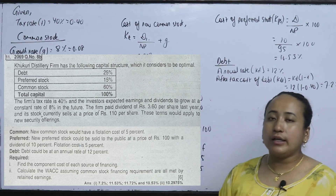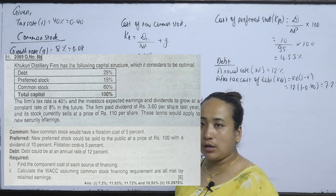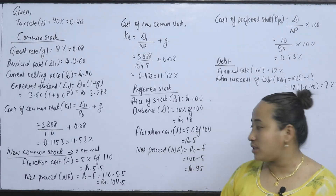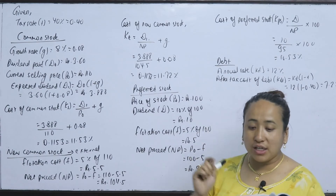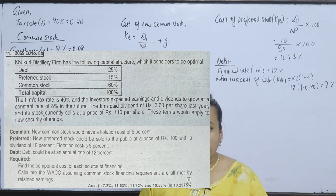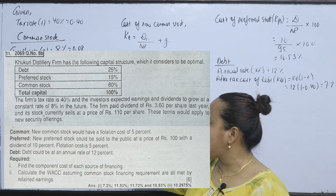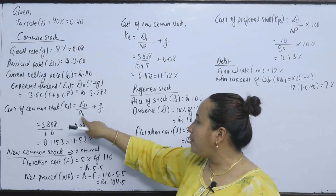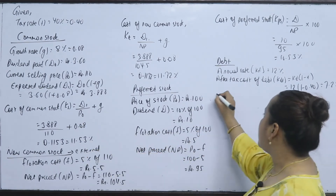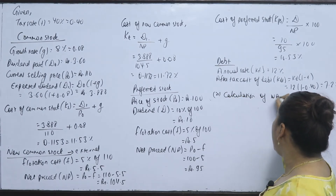Common stock has two sources: external and internal. If stock financing requirements are met by retained earnings, it is internal. Retained earnings means internal equity, so we use KS = 11.53%.